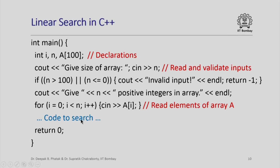Here is a simple C++ program for doing linear search. This is the main function. Here I have my declarations — an array a containing up to 100 integers in which I want to search. I ask for the size of the array and read it from the user, do some input validation, and then ask the user to give all n positive integers in the array. This program asks for only positive integers, which simplifies a few things later on, and a simple for loop reads all the elements into array a.